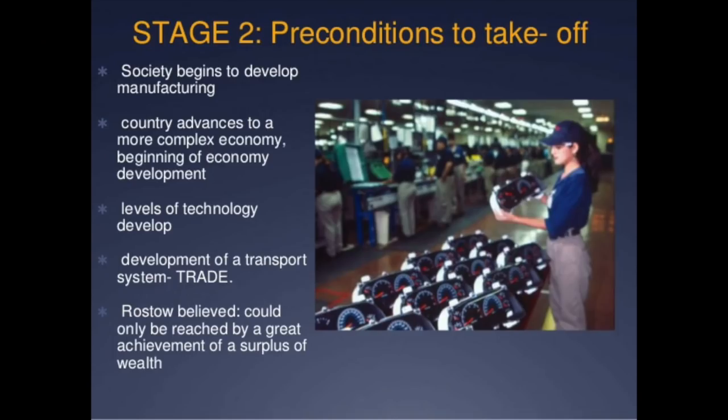Stage two of this model is called preconditions to takeoff. It's just before a country is going to start going into a huge economic boom. It's where specialization starts — a country starts seeing that they can be really good at specific things and they focus in on it. This is where they start investing in infrastructure and technologies to help them on the trade market, usually because they have a surplus they can start trading off. This was America in the late 1700s into the early 1800s, and today Sub-Saharan African countries would fit into this part of the model.